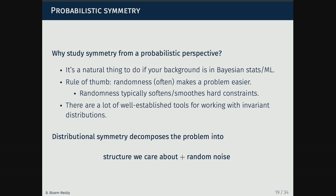Why study symmetry from a probabilistic perspective? If you come from a Bayesian stats and machine learning background it's natural, but more pragmatically, probability often makes a problem easier — it softens or smooths hard combinatorial constraints. We have well-established tools for working with invariant distributions. The key takeaway is that distributional symmetry decomposes a problem into structure we care about and random noise.